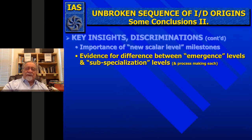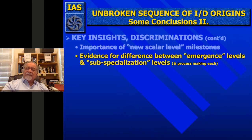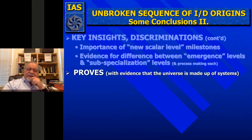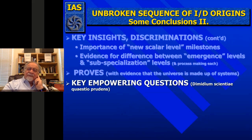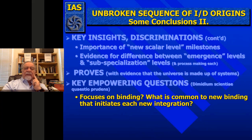This USSO also proves—with evidence—that the universe is made up of systems, and proves the spontaneous origins of the next level from the previous one. It leads to empowering questions. Half of science is asking the right question. It focuses on binding: what is common to new binding that initiates each new integration? Tom Marzoff is big on binding. You emphasize binding between parts, and you can see that the binding changes from one level to the next because you're dealing with different parts. The whole idea of the unbroken sequence is that new bindings emerge for each new level.